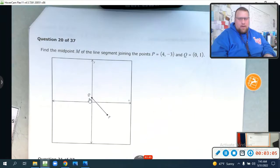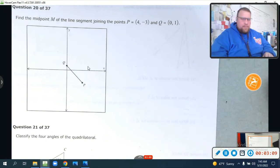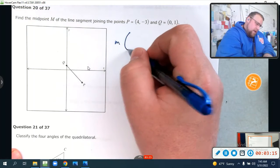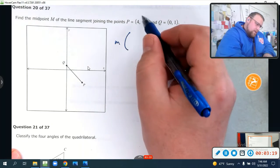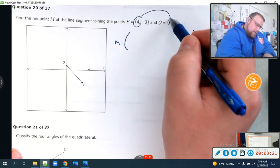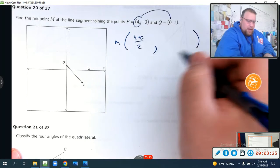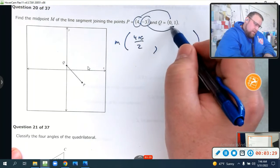Find the midpoint of the line segment joining the points P and Q. Well, to do the midpoint, you just average your X's and your Y's. So, in other words, I'm going to look at my X's, 4 and 0. I'm going to have 4 plus 0 over 2. That's going to be my X value of the midpoint. I'm going to average my Y's, negative 3 plus 1 over 2.